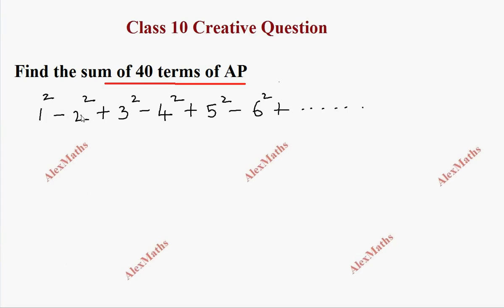We have alternate plus minus plus minus. We are grouping. Now we have 1 square minus 2 square plus 3 square minus 4 square plus 5 square minus 6 square plus dot dot dot eventually.